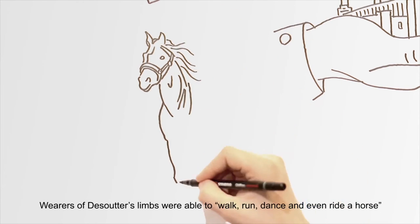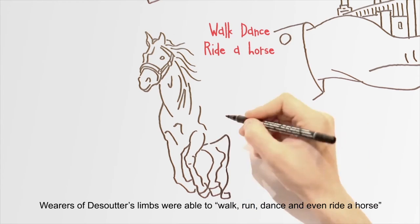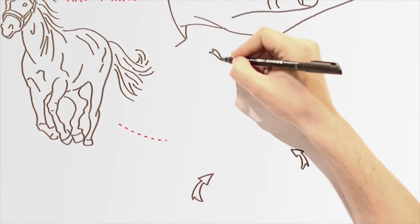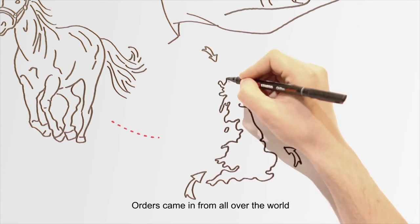Wearers of Desuiters limbs were able to walk, run, dance, and even ride a horse. Orders came in from all over the world.